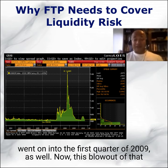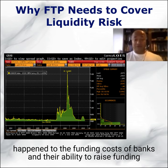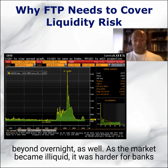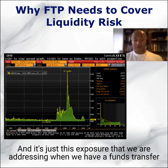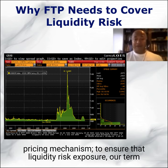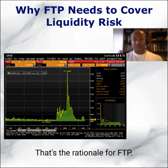That illiquidity went on into the first quarter of 2009 as well. This blowout in the three-month overnight funding spread basically shows what happened to the funding costs of banks and their ability to raise funding beyond overnight. As the market became illiquid, it was harder for banks to raise funding — certainly in the wholesale markets — beyond the overnight. It is precisely this exposure that we are addressing when we have an FTP mechanism to ensure our term liquidity premium exposure is incorporated in our customer pricing. That is the rationale for FTP.